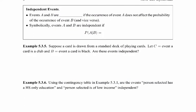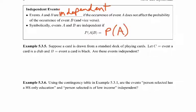Let's talk about independent events. A and B are considered independent if the occurrence of A does not affect the probability of B occurring, and vice versa. For example, flipping a coin twice — the result of the first flip has no impact on the second. Symbolically, A and B are independent if P(A|B) = P(A).